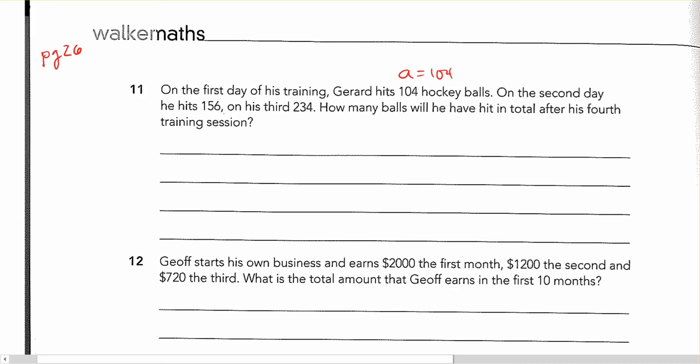On the second day he hits 156, and on his third he hits 234. How many will you have hit in total? Oh, that means I'm looking for a sum after his fourth training session. So that's n equals 4. I'm looking for the sum up to the fourth.